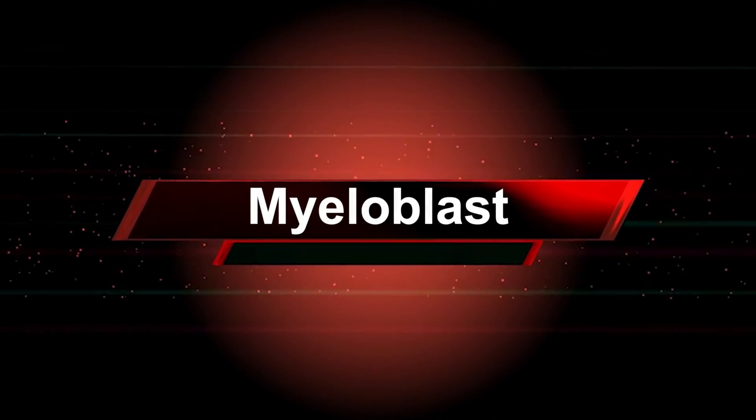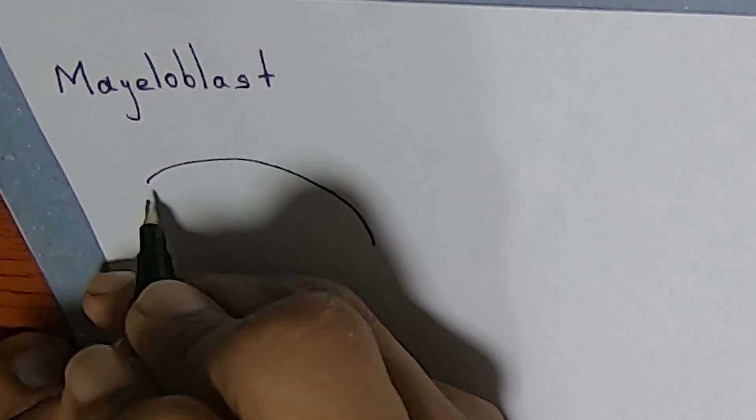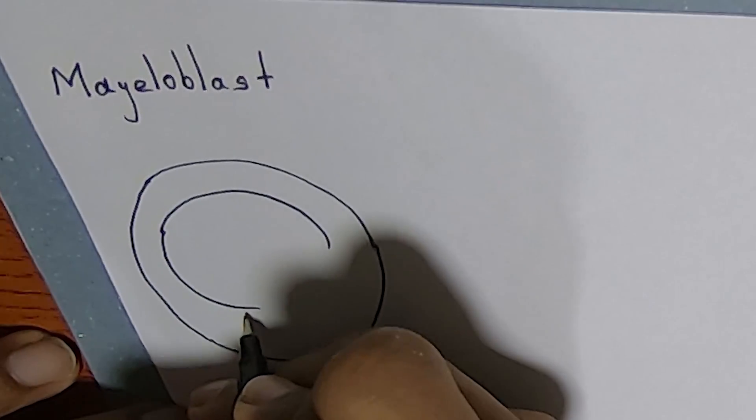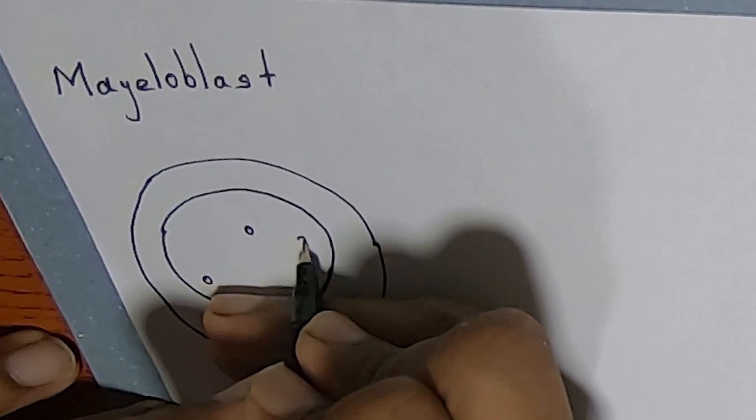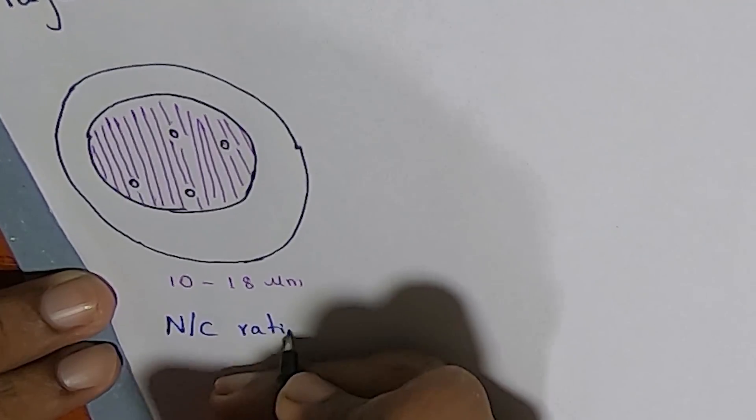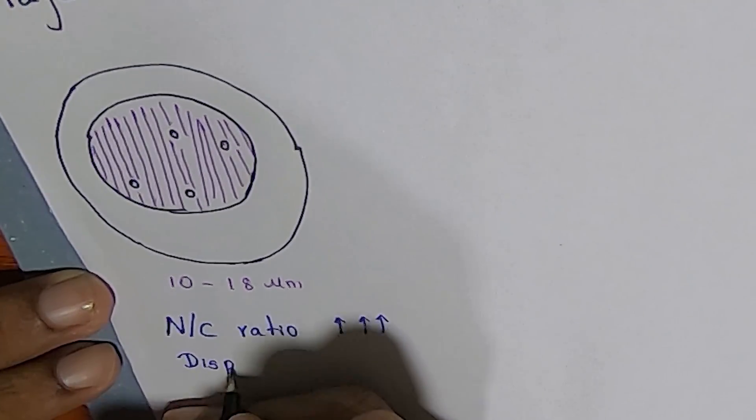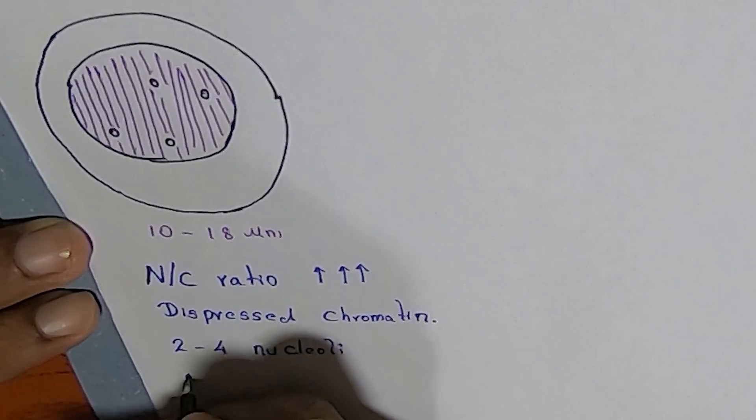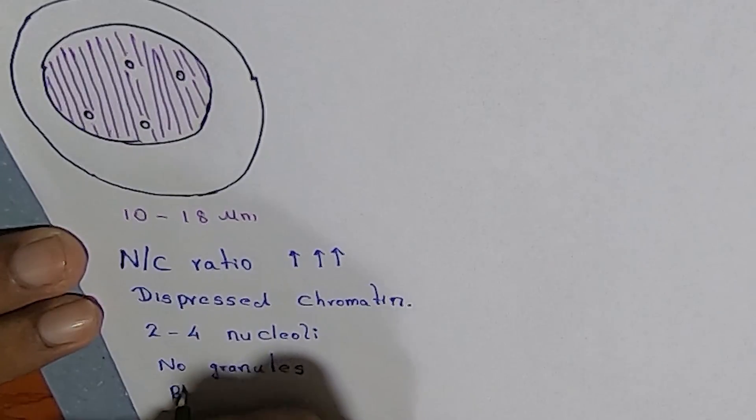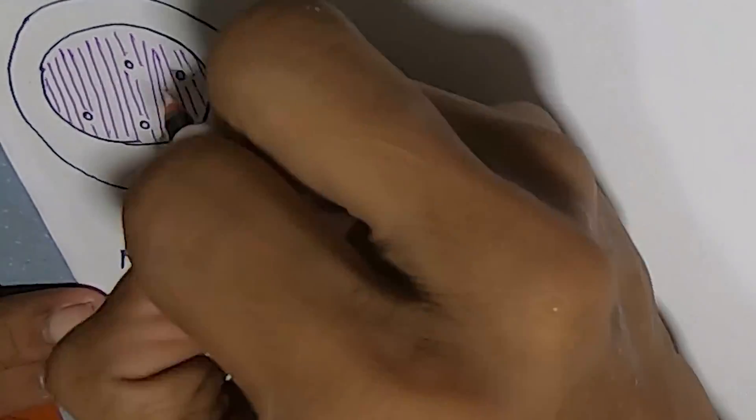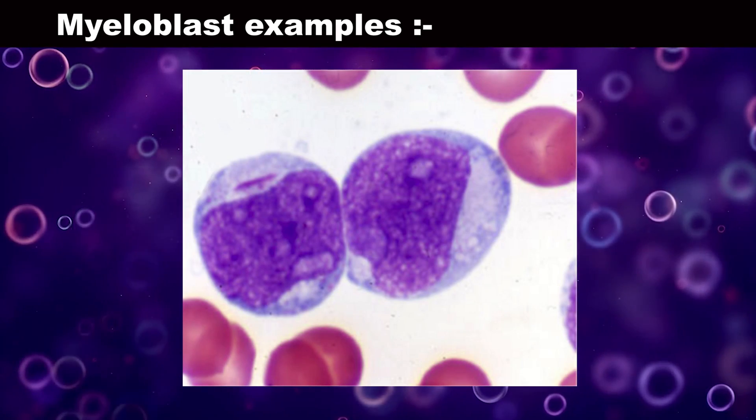Myeloblast: the first committed stem cell of granulocytes. In myeloblast, usually it is spherical and about 10 to 18 micrometers in size. Nuclear to cytoplasm ratio is very high. It is evenly dispersed chromatin with two to four nucleoli, and it does not contain granules. However, cytoplasm is blue in color due to high RNA content. These are some real examples.